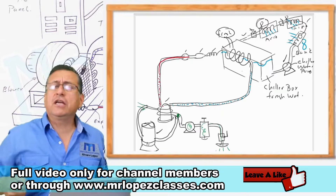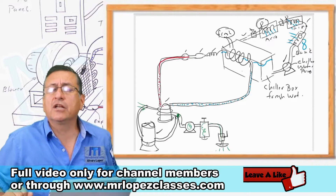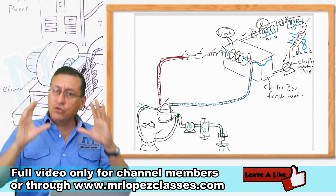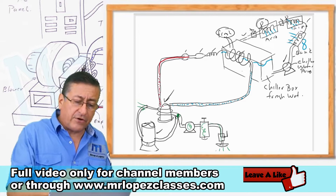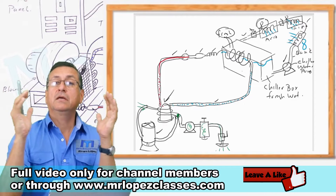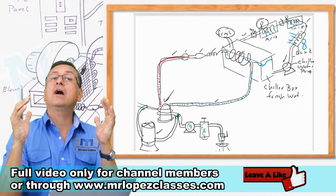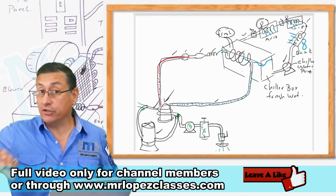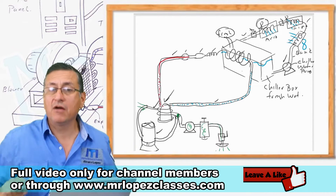A chiller system is an air-conditioning system that uses refrigerant - compressor, evaporator, and refrigerant - but it is like a self-contained system. You have one heat exchanger with raw water for the condenser, and another heat exchanger with fresh water for the evaporator.